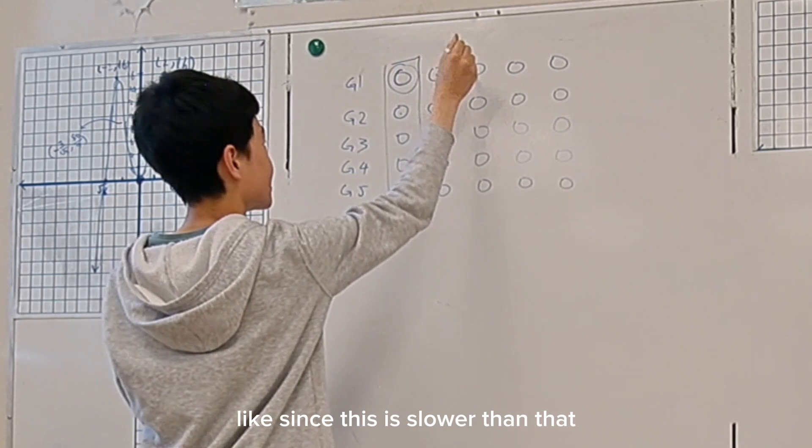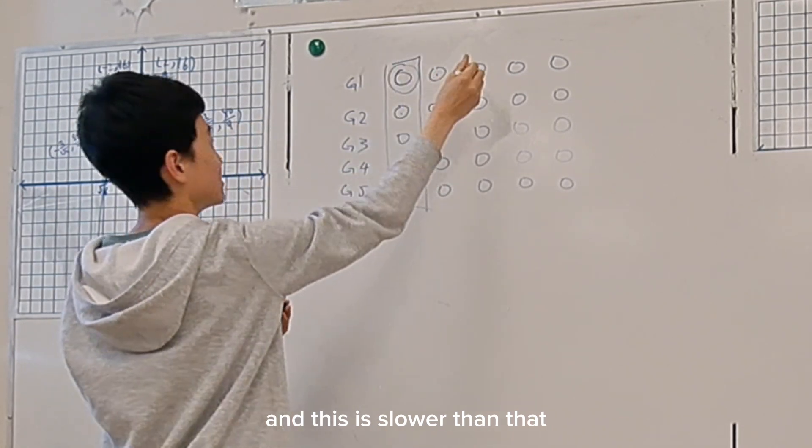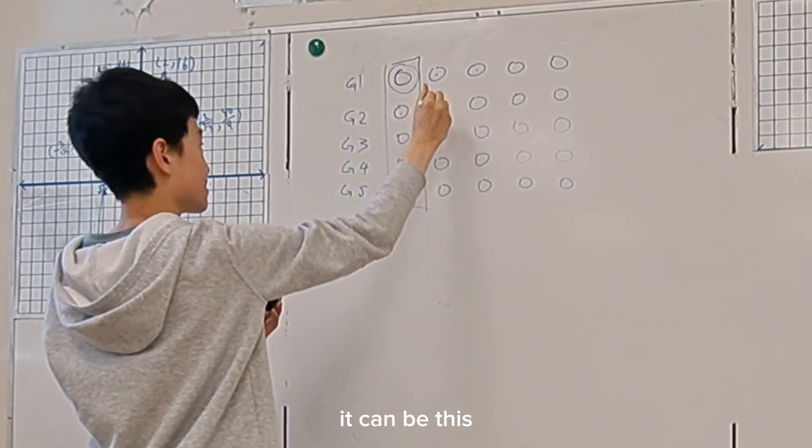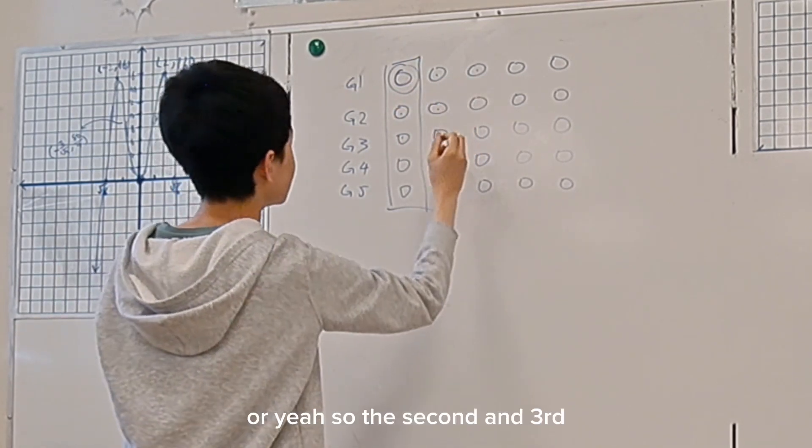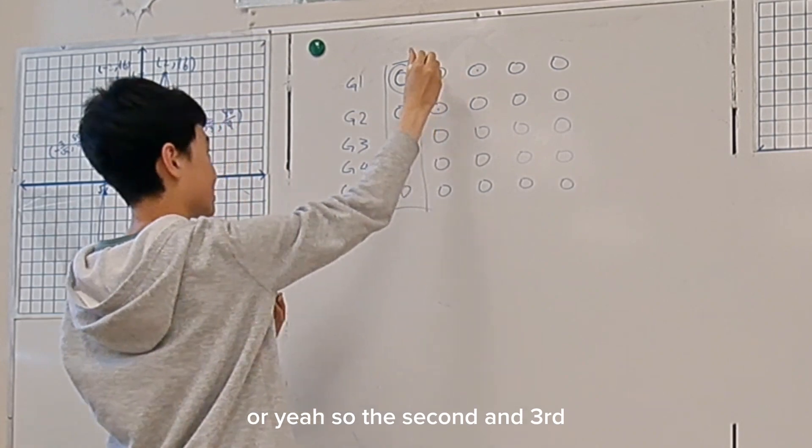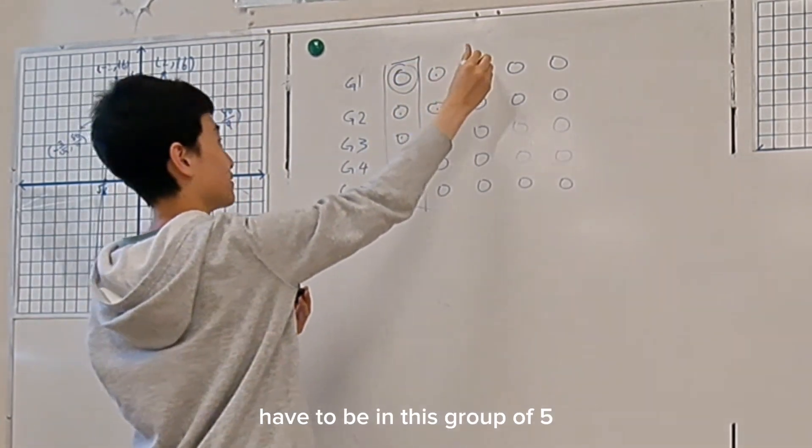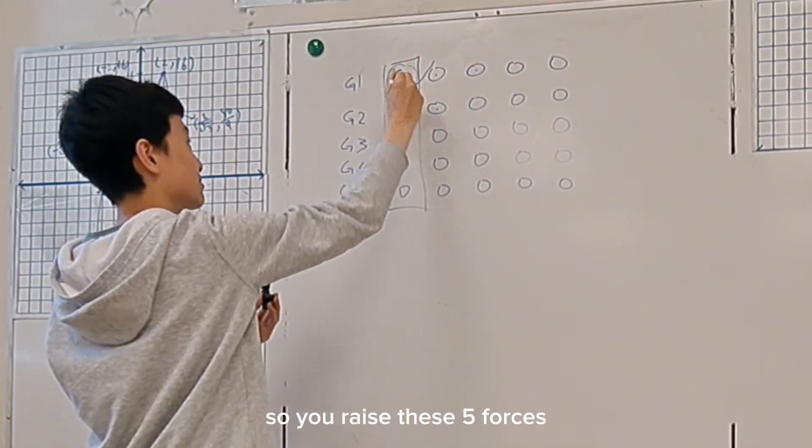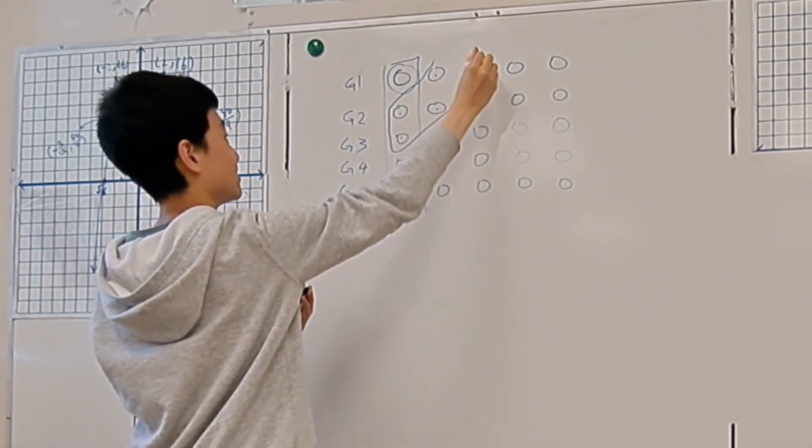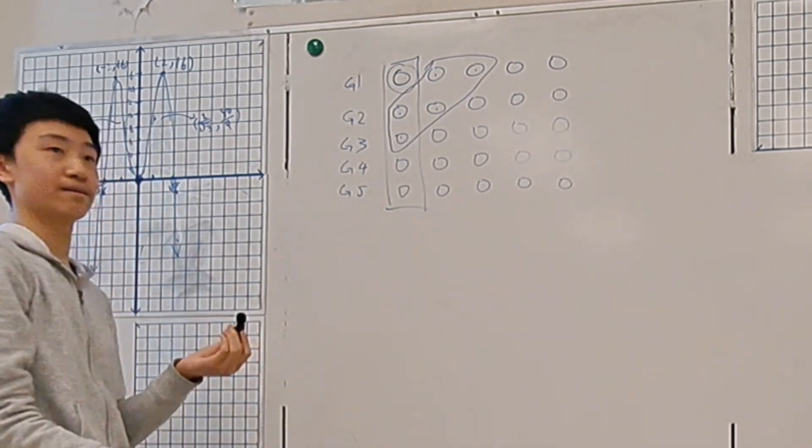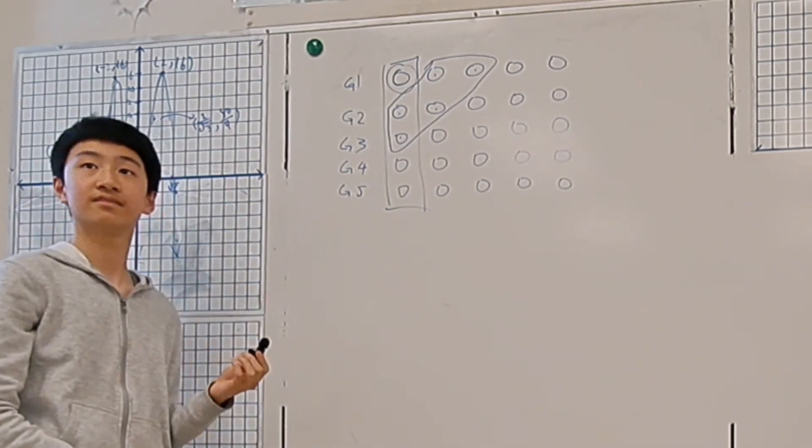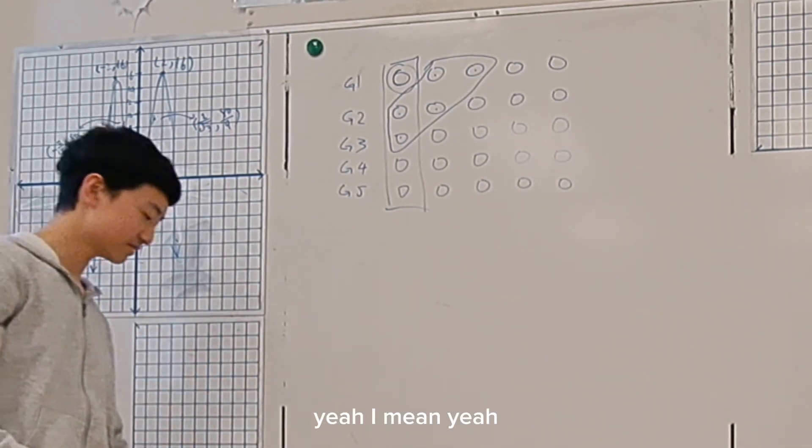So the second and third have to be in this group of five. So you race these five horses and then you can know the second and the third. What do you think? Damn. I mean, yeah, that's a very interesting problem.